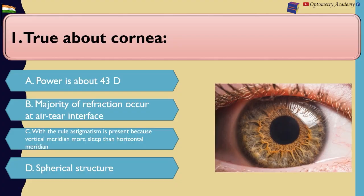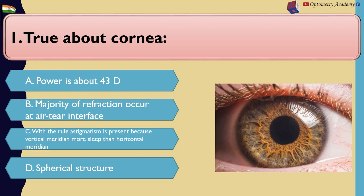True about cornea: A. Power is 43D. B. Majority of refraction occurs at the air-tear interface. C. With-the-rule astigmatism is present because the vertical meridian is more steep than the horizontal meridian. D. Spherical structure.